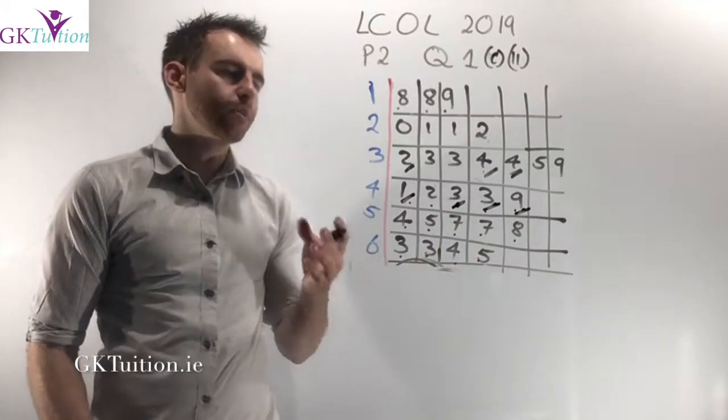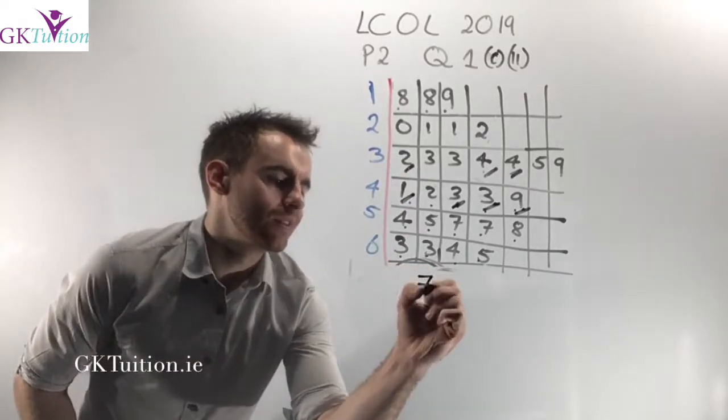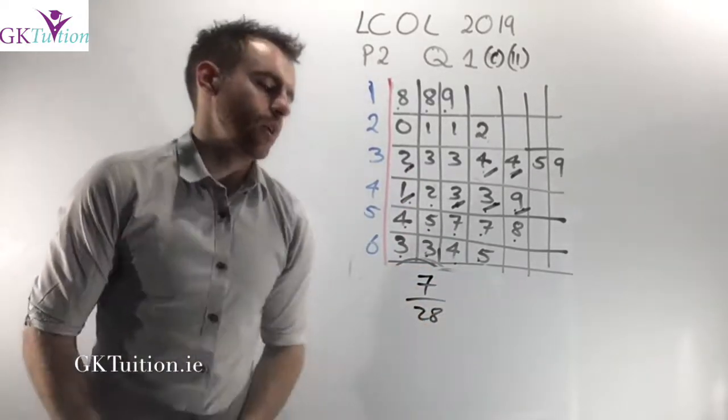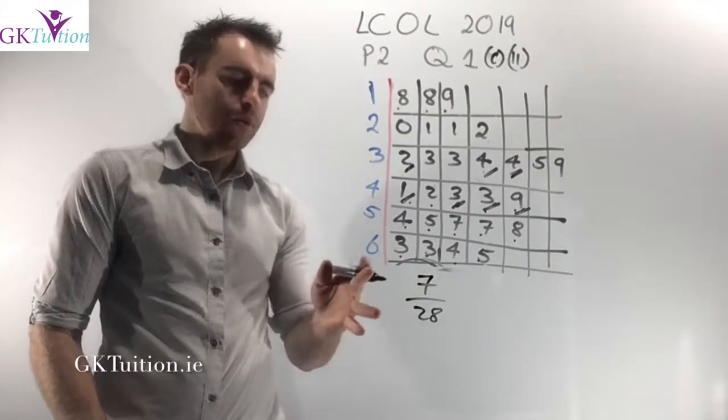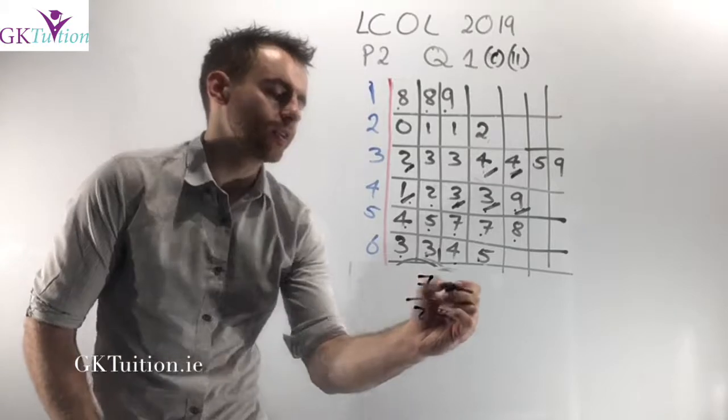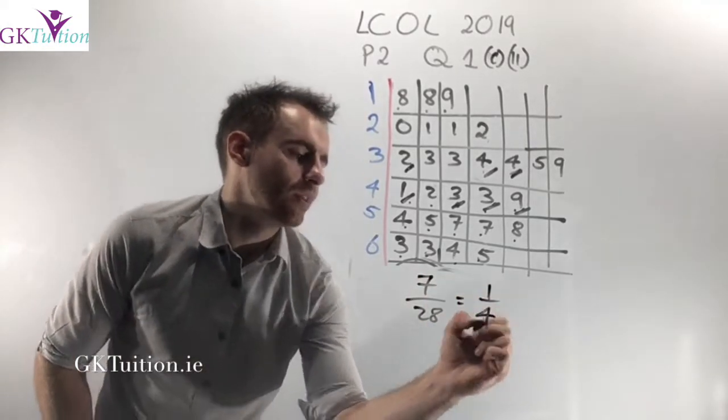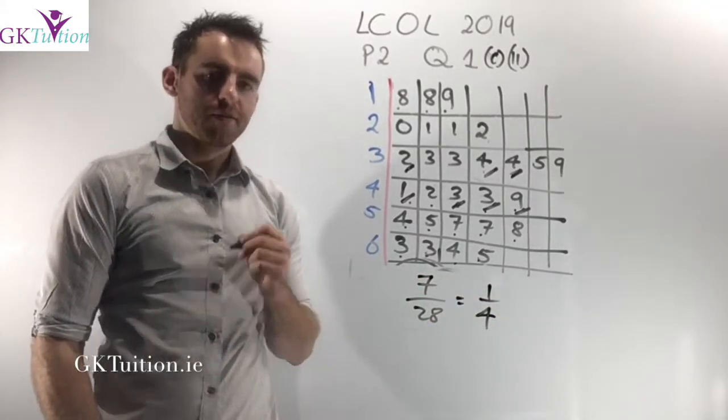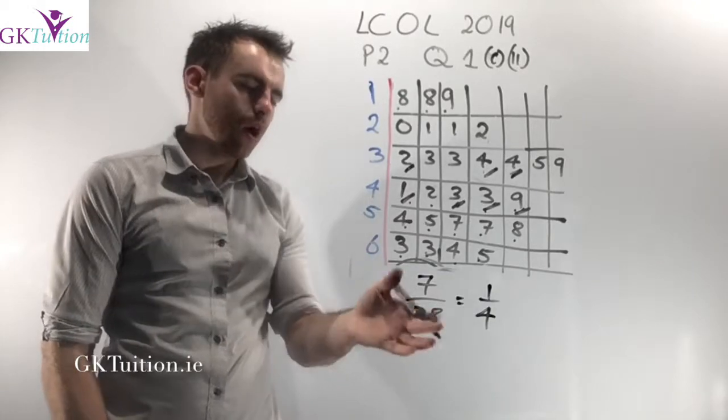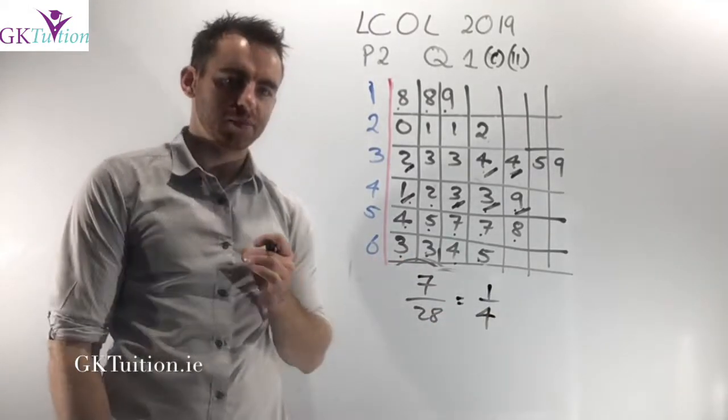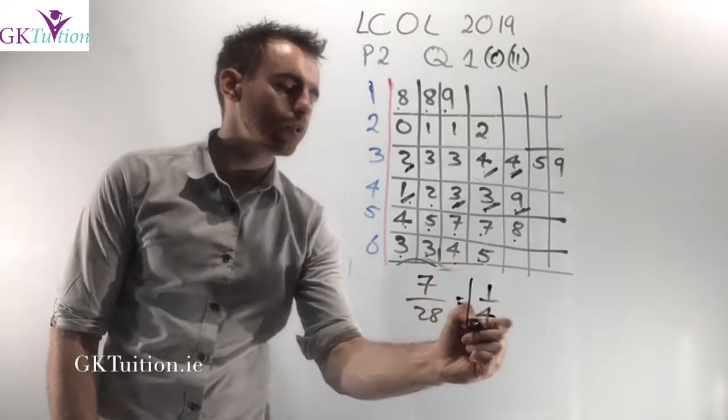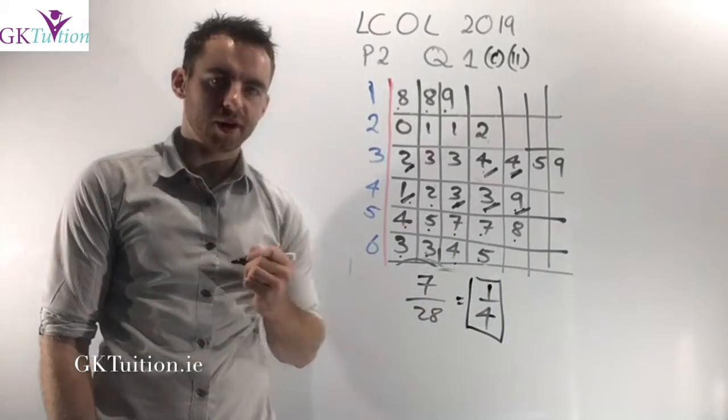So the probability that I would pick one of these seven people is 7 over 28. There's seven people that fit my criteria out of a total of 28. But you need to realize that this can be simplified down. 7 over 28 is the same as one quarter. If you weren't 100% sure on that, always plug fractions into your calculator because your calculator will give it to you in its simplest form. So one quarter is the final answer for that part of the question.